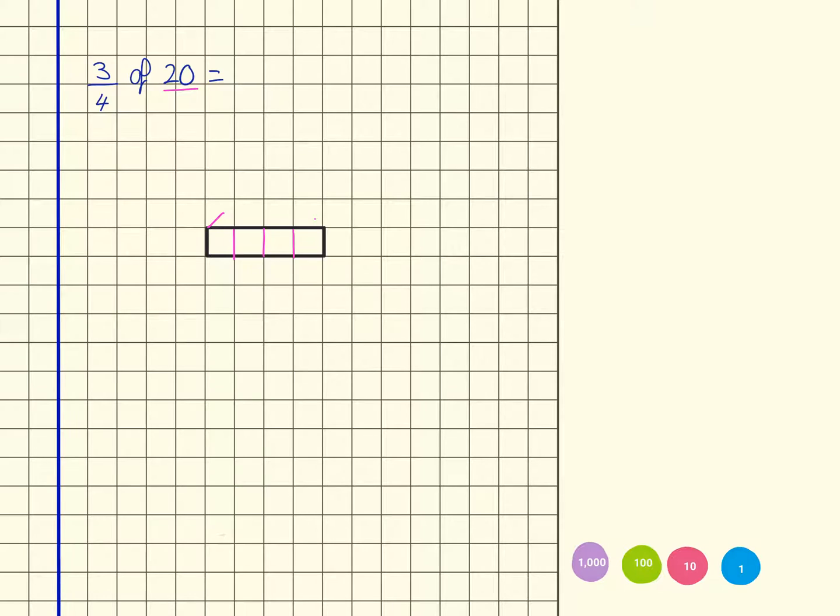Now I know that the whole is 20, and 20 has been split into quarters. I know that because of this number here, and it's asking us to calculate what three quarters would be. So that's this section.